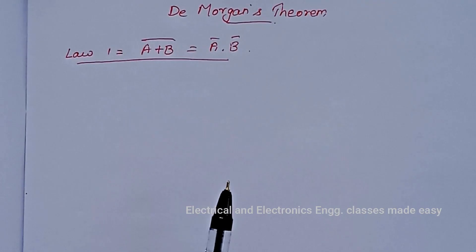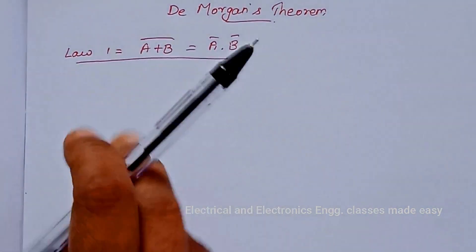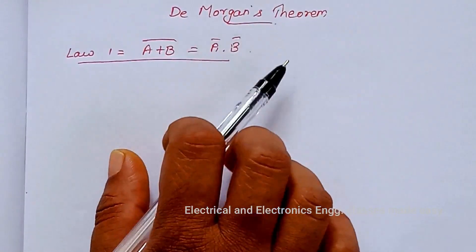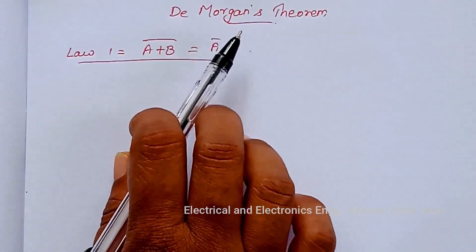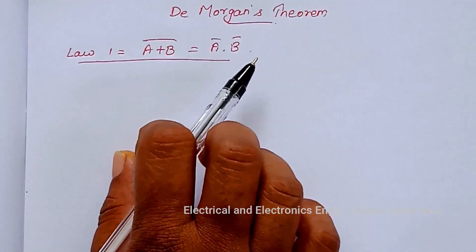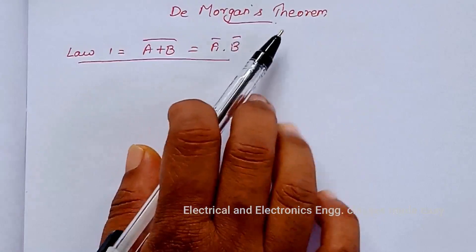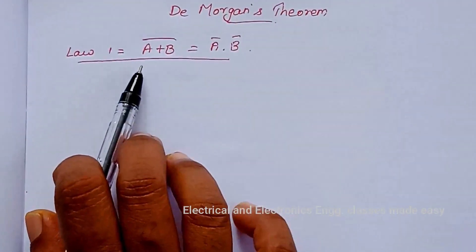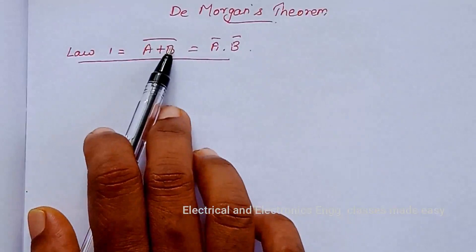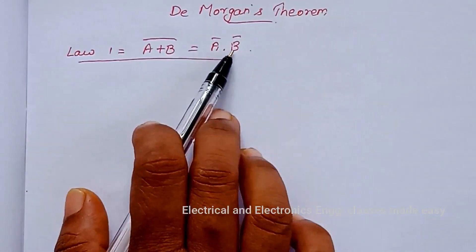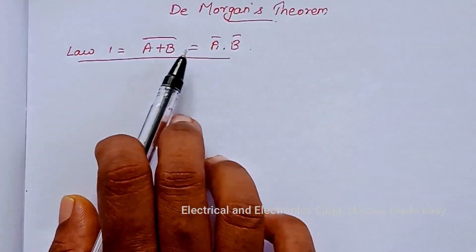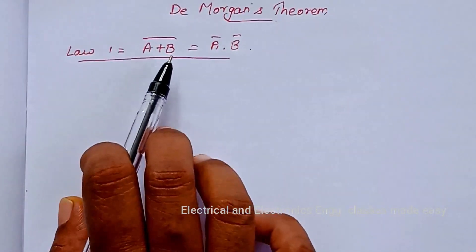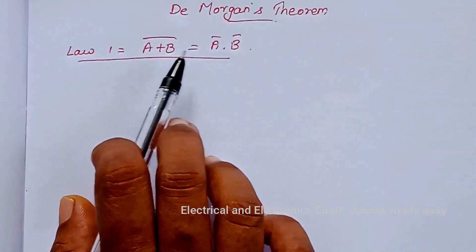Hello everyone, welcome to the new class. Today's class is about De Morgan's Theorem. De Morgan's Theorem represents two of the most powerful laws in Boolean algebra. The first law is: A plus B, whole bar, is equal to A bar dot B bar. This law states that the complement of a sum of variables is equal to the product of their individual complements.